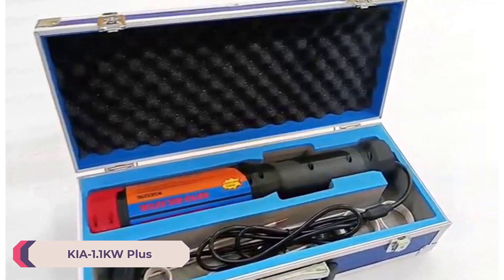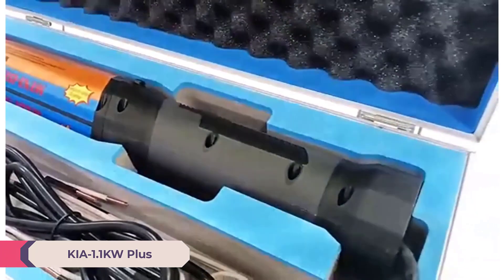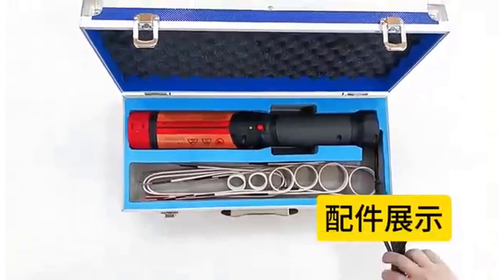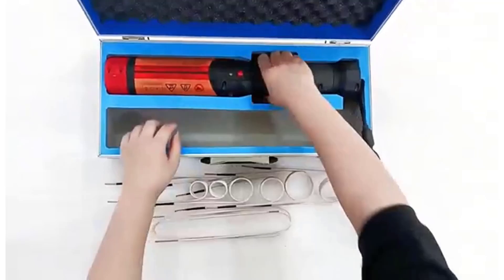Number 4: Kia 1.1KW Plus Magnetic Induction Heater. The Kia 1.1KW Plus Rotatable Magnetic Induction Heater is a powerful and portable car repair tool, perfect for removing stubborn screws, nuts, and bolts with ease.